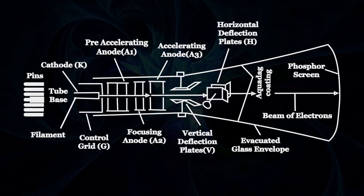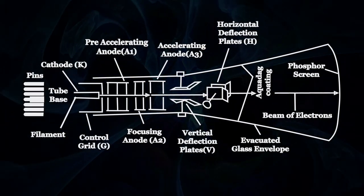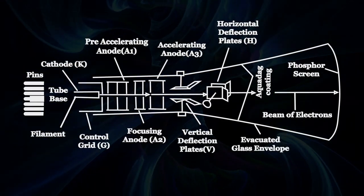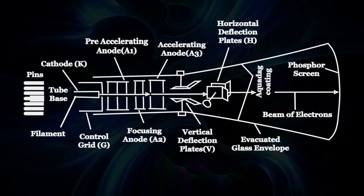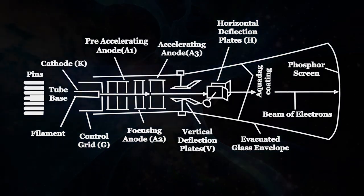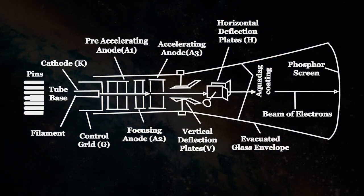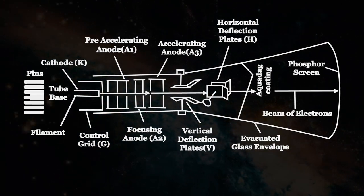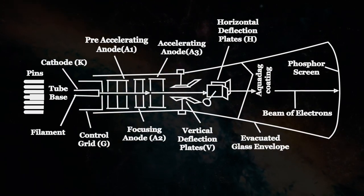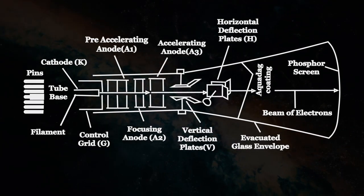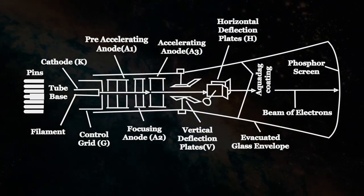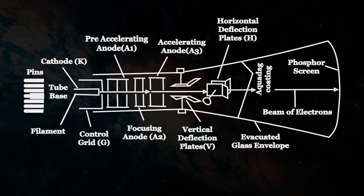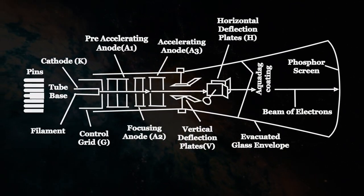Now let's observe the diagram. The basic construction of a CRT: it has pins, tube base, cathode K, pre-accelerating anode A1, accelerating anode A3, horizontal deflection plates H, phosphor screen, beam of electrons, aquadag coating, evacuated glass envelope, vertical deflection plates V, focusing anode A2, control grid G, and filament.